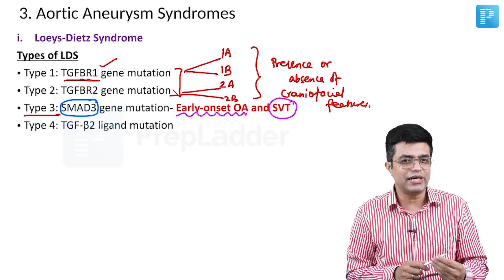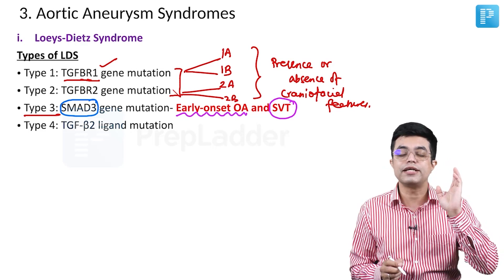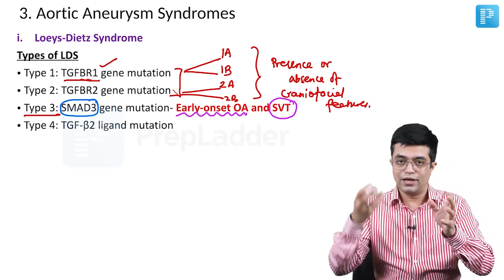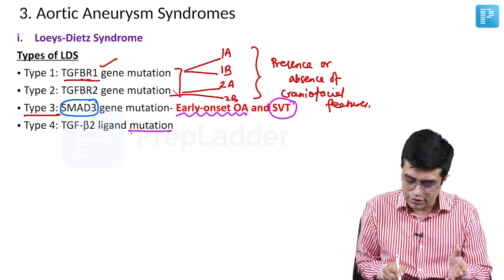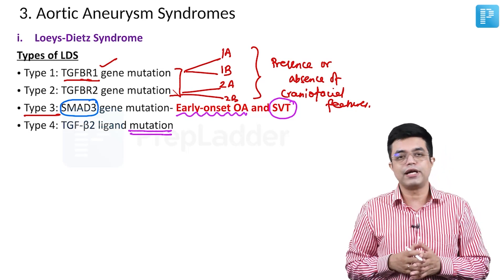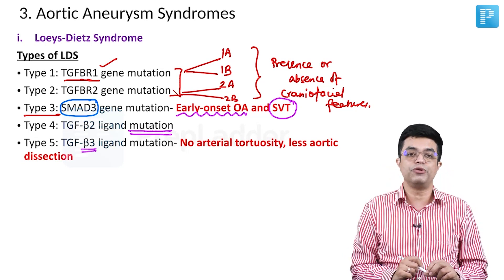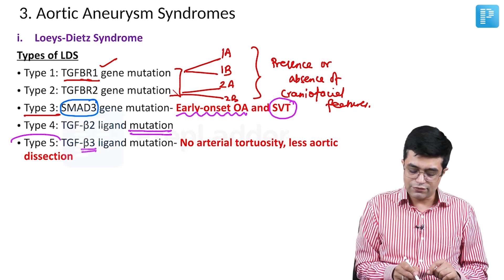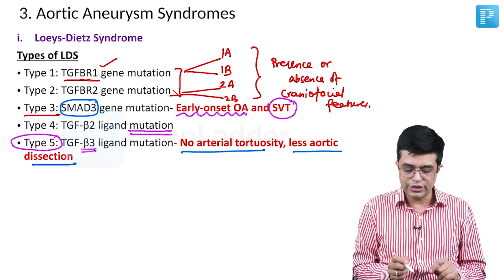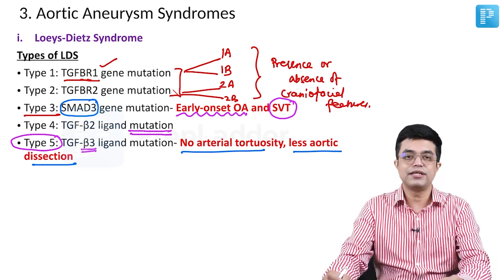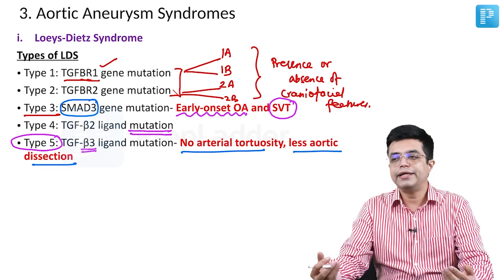Type 4 LDS involves a mutation not in the receptor but in the ligand — TGF beta 2 ligand is missing or abnormal, producing Type 4 LDS. Type 5 involves TGF beta 3 ligand mutation. Type 5 is a milder form — there is no arterial tortuosity and less aortic dissection is seen.